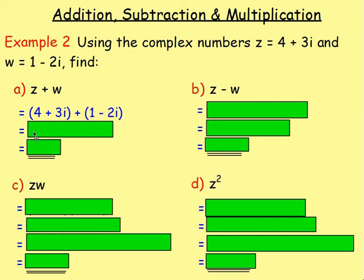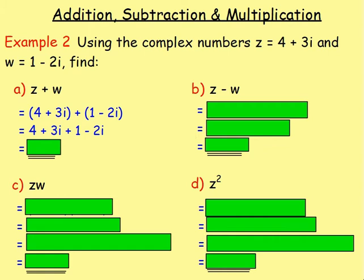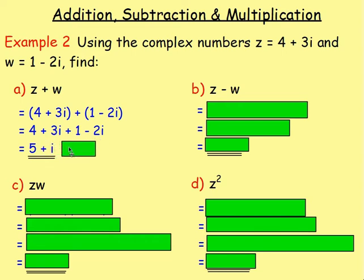Removing the brackets: 4 + 3i + 1 − 2i. Add the real parts and the imaginary parts separately. The real parts: 4 + 1 = 5. The imaginary parts: 3i − 2i = 1i. So the answer is 5 + i.